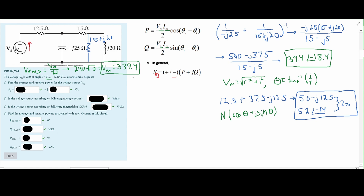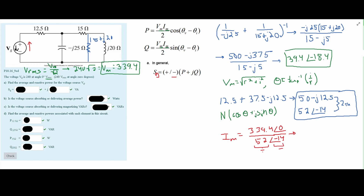Our problem is not directly using total impedance — remember, we're solving for Imax. Using Ohm's law, Imax = Vmax / Z_total. Vmax is 339.4 at 0 degrees, and our total impedance is 52 at -14 degrees. We divide the magnitudes and subtract the angles, giving us Imax ≈ 6.6 at an angle of approximately 14 degrees.